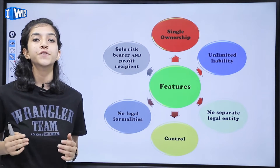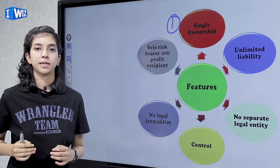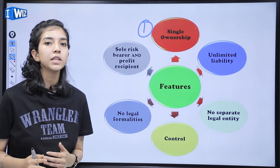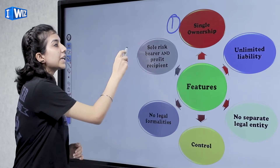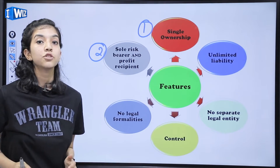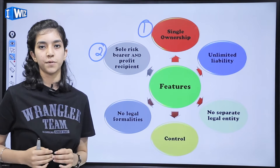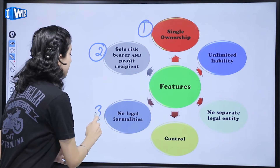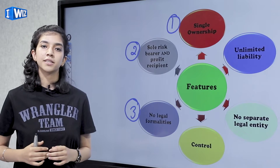Now, what are the features of sole proprietorship? The first one is single ownership — one single owner who runs the business and does all the activities for smooth functioning. The second one is sole risk bearer and profit recipient — since there is only one person responsible for everything, he gets all profits and bears all losses. The third one is no legal formalities — starting or closing a sole proprietorship requires minimal legal formalities.